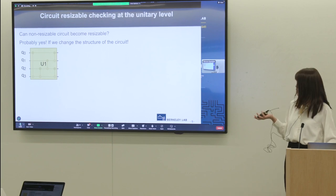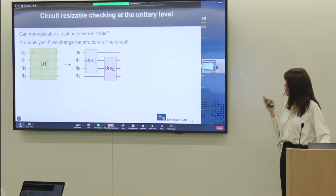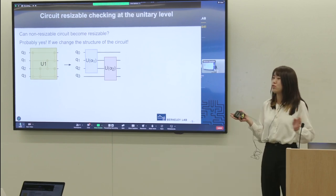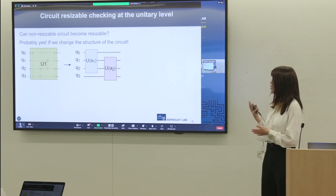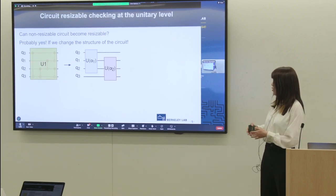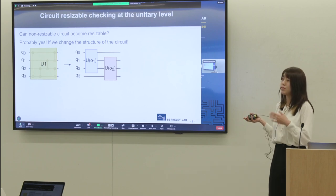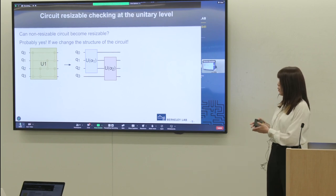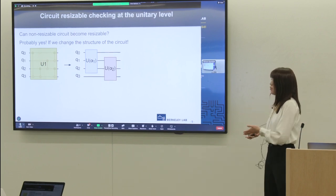So keeping this knowledge in mind, we can construct a circuit in this structure, which includes two gates, U alpha 1 and U alpha 2. U alpha 1 is applied to the first three qubits, and U alpha 2 is applied to the last three qubits. In this way, Q0 does not interact with Q3. So we may be able to reuse Q0 for Q3.